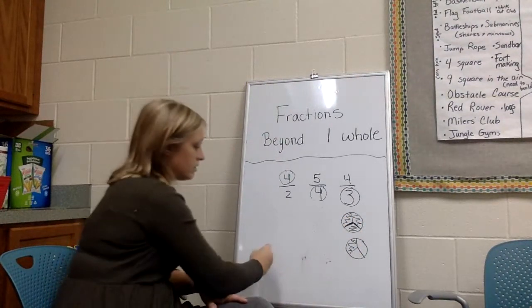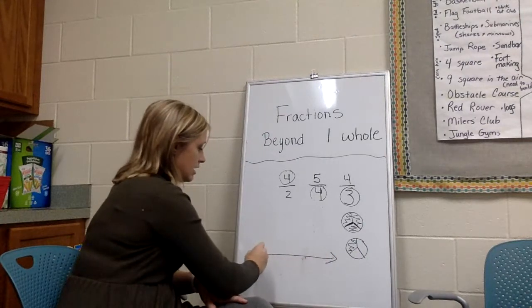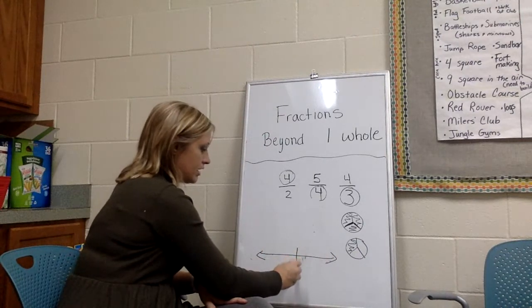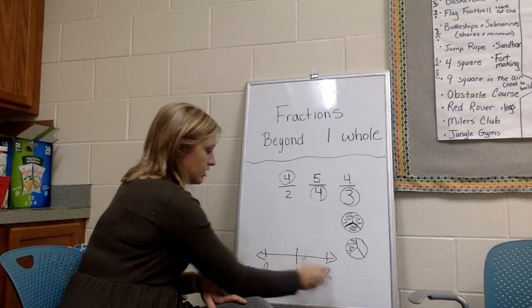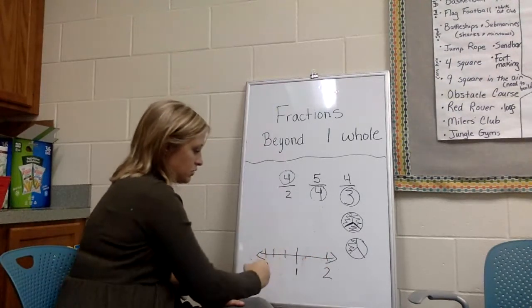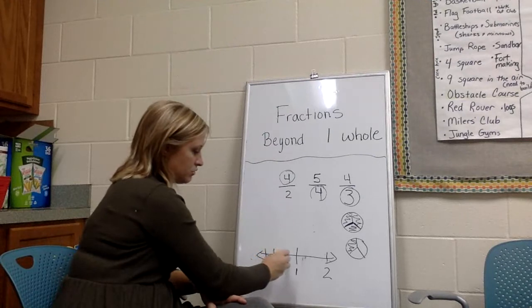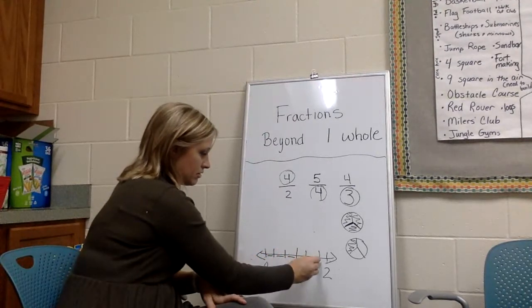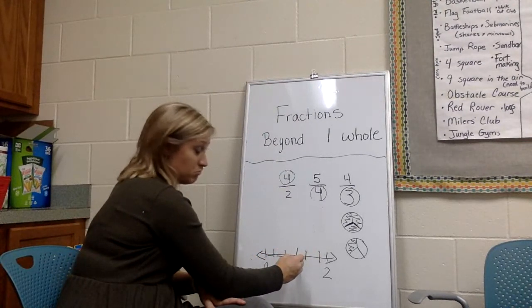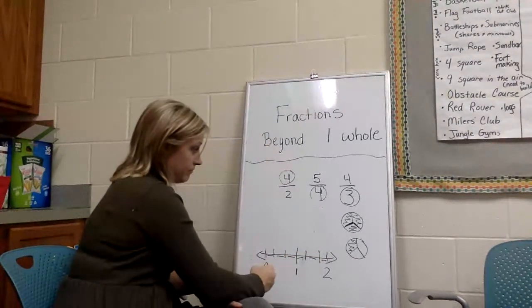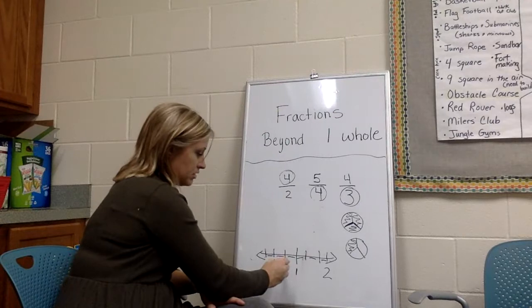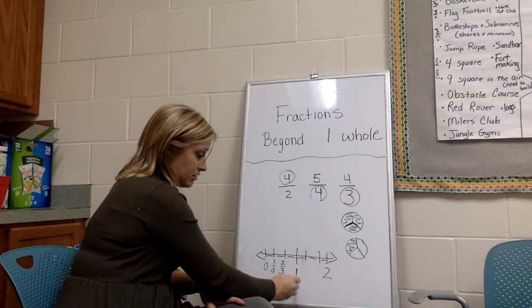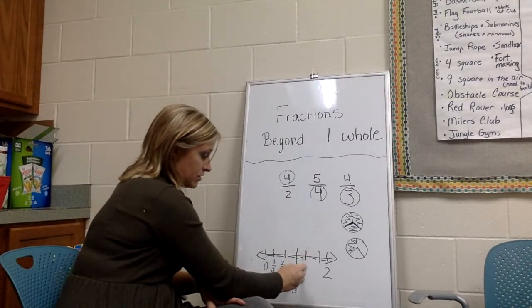Now if I show that on a number line, I'm going to put one right here and I know zero is here. I'm going to put two here. I need three pieces between zero and one. So one, two, three. I need three pieces between one and two. One, two, three. And now I've got one third here, two thirds here, one is three thirds, and then four thirds here.